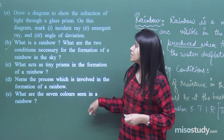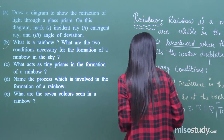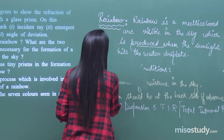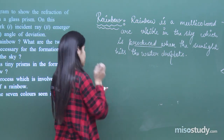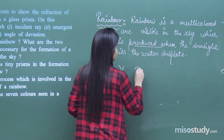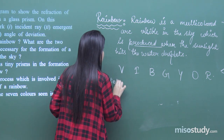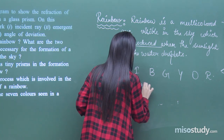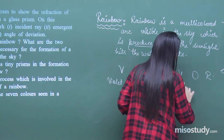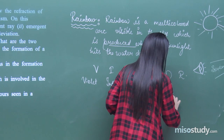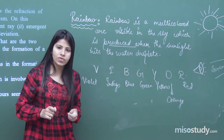What are the seven colours seen in a rainbow? The seven colours can be remembered as VIBGYOR: Violet, Indigo, Blue, Green, Yellow, Orange, and Red. These are the seven different colours you see in a rainbow.